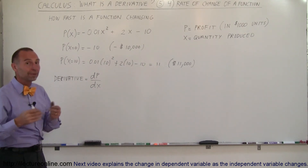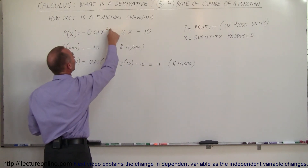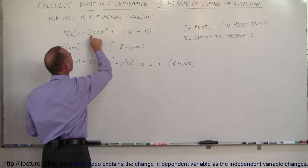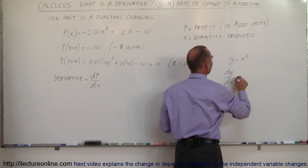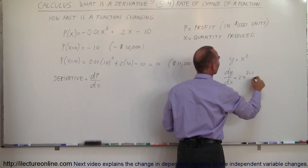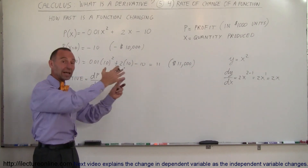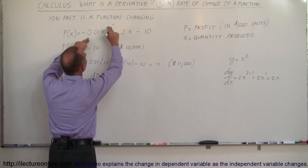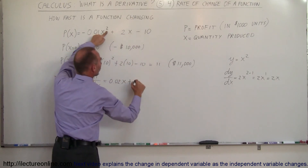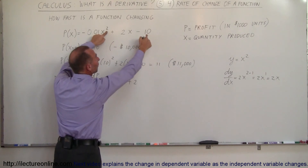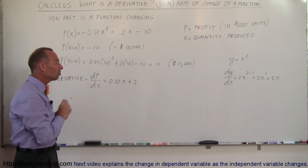If you've already studied some calculus, we can find the derivative using the shorthand process. You take the exponent of x, bring it forward and multiply the constant, then subtract one from the exponent. For example, if y = x², then dy/dx = 2x. Applying this to our function, the derivative is -0.02x + 2. The derivative of the constant term is just 0.